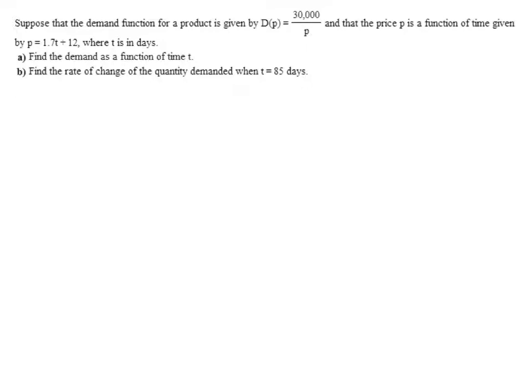We're given the demand function for our product as a function of price, 30,000 divided by p. And we're also given price as a function of time, p equals 1.7t plus 12, where t is in days.